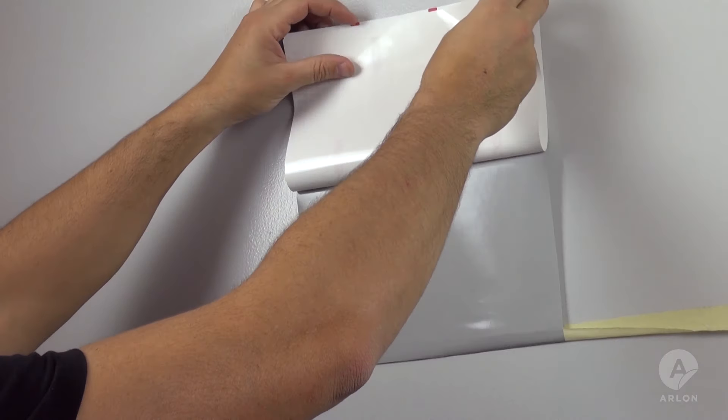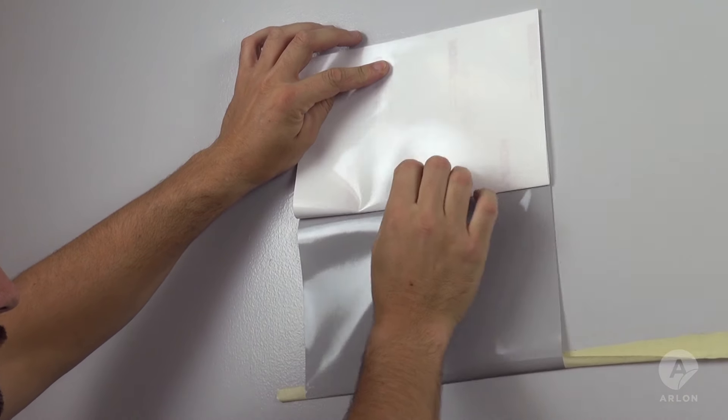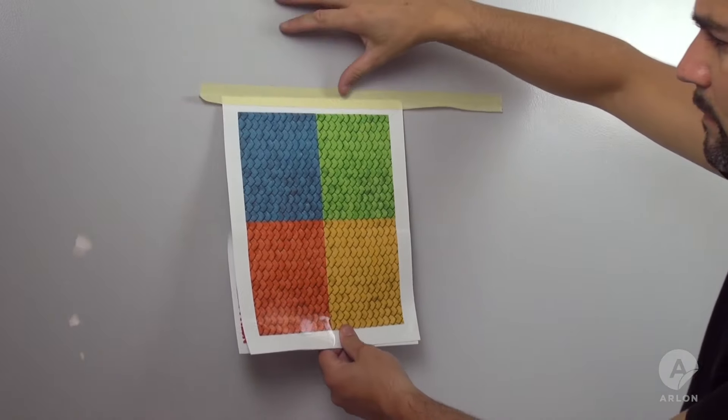Then, peel back about half of the liner. This helps you stay in control of the vinyl, making wrinkles and stretching less likely.